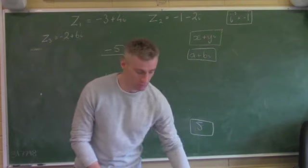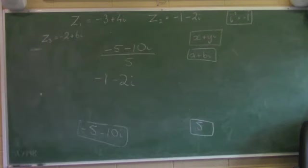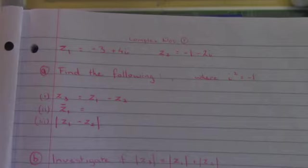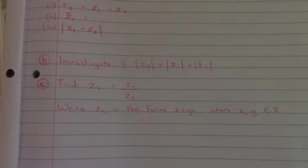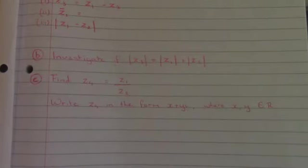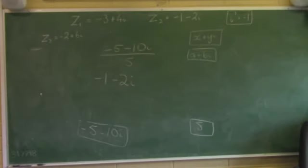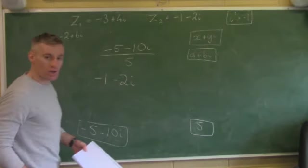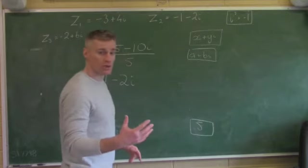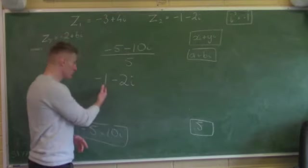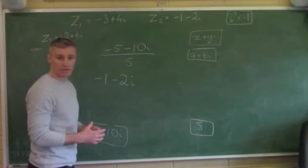Thank you for listening. I'll just zoom in so you can see the question. So basically there is just the question that I did out: part A, part B — investigate, and part C — find Z4 which is equal to Z1 over Z2. Write Z4 in the form x plus yi where x and y are elements of R. Elements of R means they're real numbers — any number on a number line.